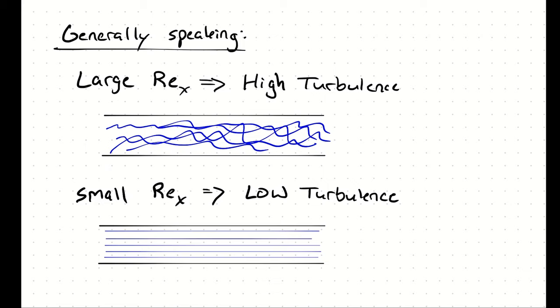When the viscous forces are large relative to the inertial forces, i.e. a low Reynolds number, a molecule doesn't affect the molecules around it much. This generally leads to smooth sheets of fluid flow which we call laminar, which is a fancy way of saying not turbulent.